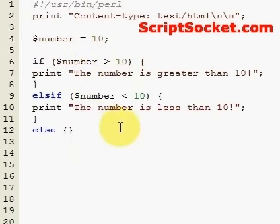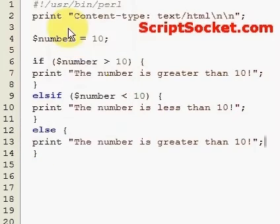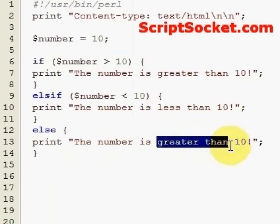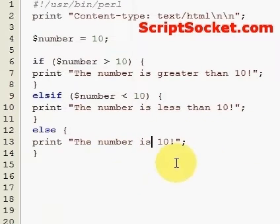And if both of these conditions are not satisfied, then the number must be 10. So else, the number is 10. That's what we will print out if it is 10. So let's run that and see what comes up.